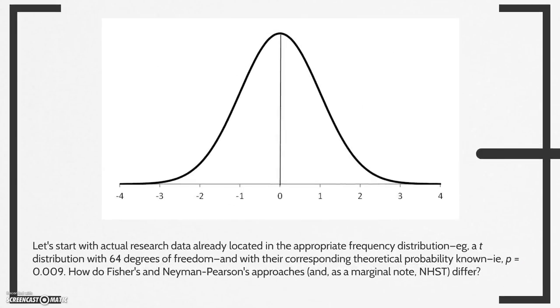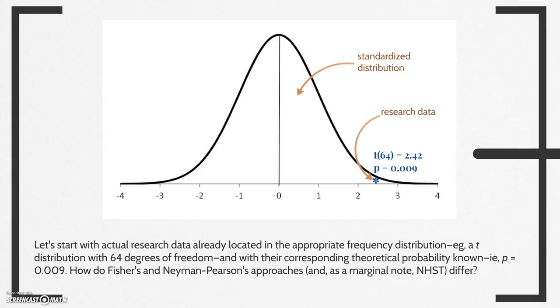Let's start with actual research data already located in the appropriate frequency distribution, for example at the distribution with 64 degrees of freedom, and with their corresponding theoretical probability known, that is, a p-value of 0.009. How do Fisher's and Neiman-Pearson's approaches, and as a marginal node NHST, differ?